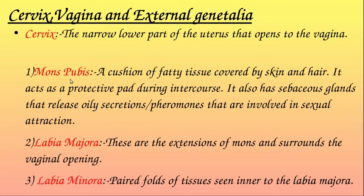To summarize mons pubis: it is a cushion of fatty tissue covered by skin and hair. It acts as a protective pad during intercourse. It also has sebaceous glands that release oily secretions or pheromones involved in sexual attraction.